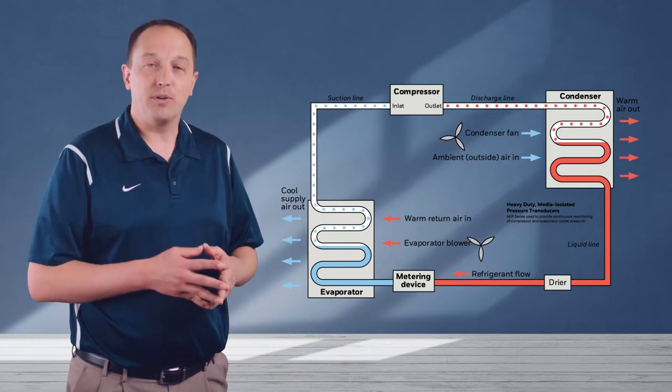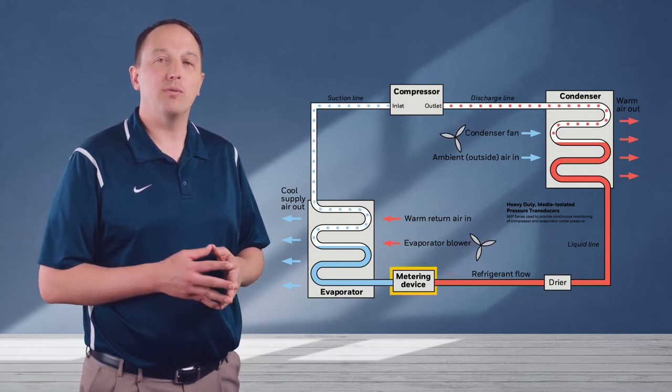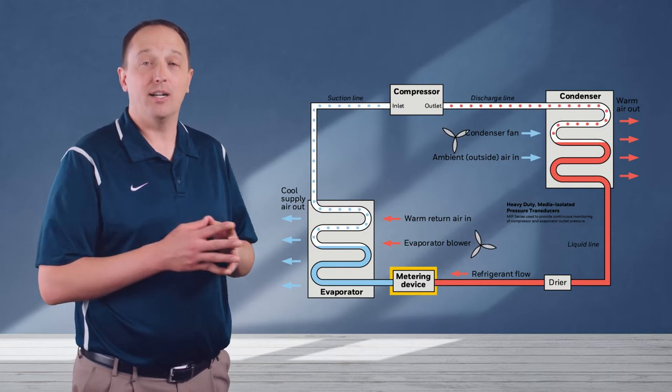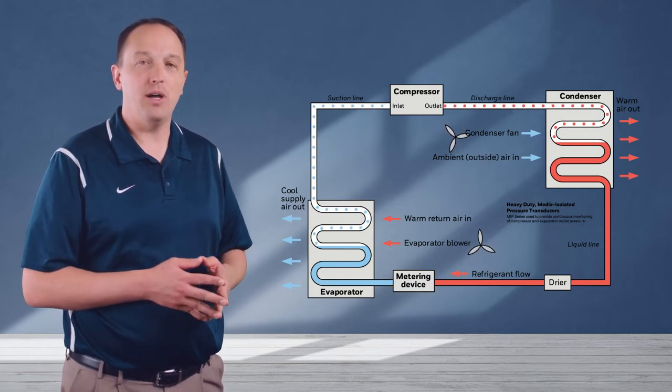The hot liquid refrigerant is forced through a flow restricting metering device which reduces the pressure on the liquid and consequently lowers the temperature as well.